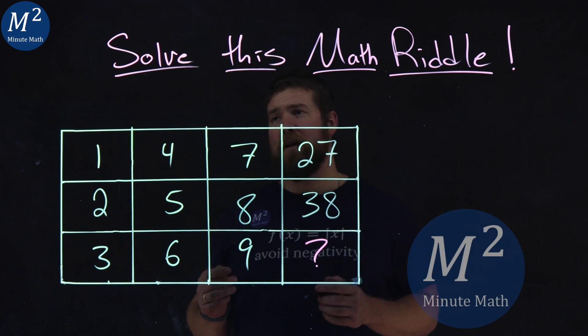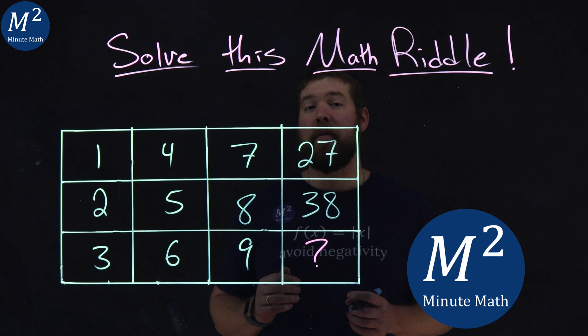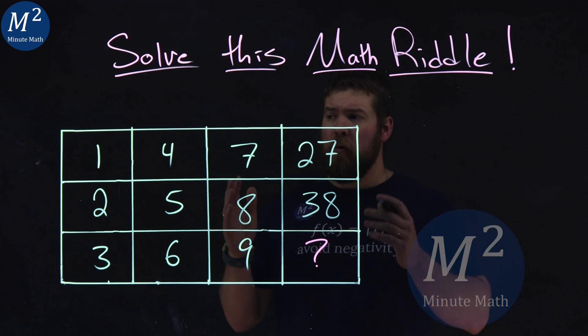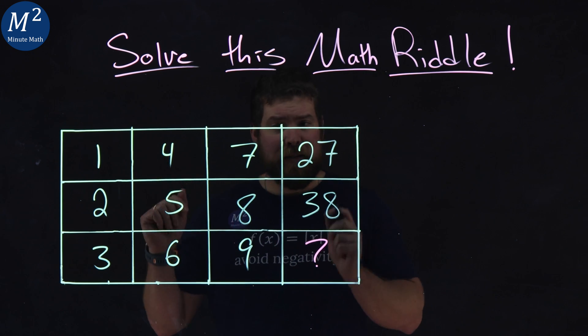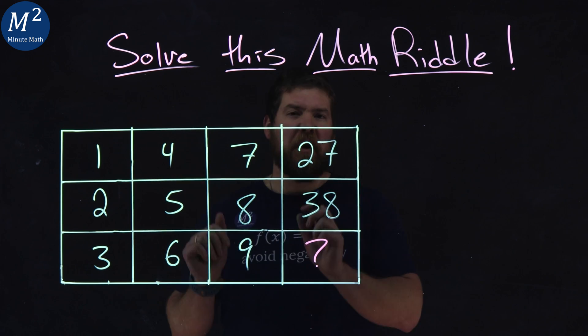Hi, I'm Sean Gannon, and this is MinuteMath, and we've got to solve this math riddle. Our riddle is this. We have a box here, and we have 12 squares.